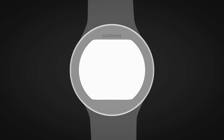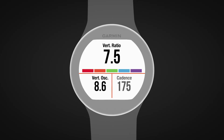During your running activity, scroll down until you see either of the running dynamics screens. The color gauge applies to the top metric, and the position of the pointer on the gauge indicates how your value compares to other runners.